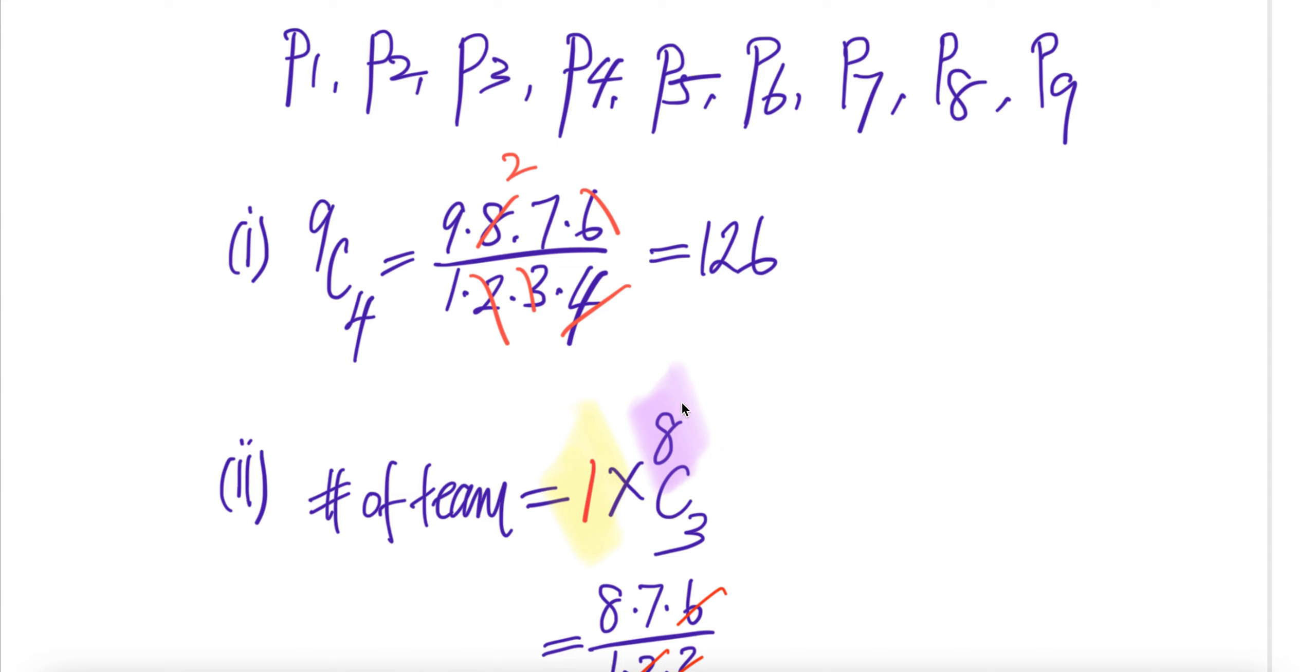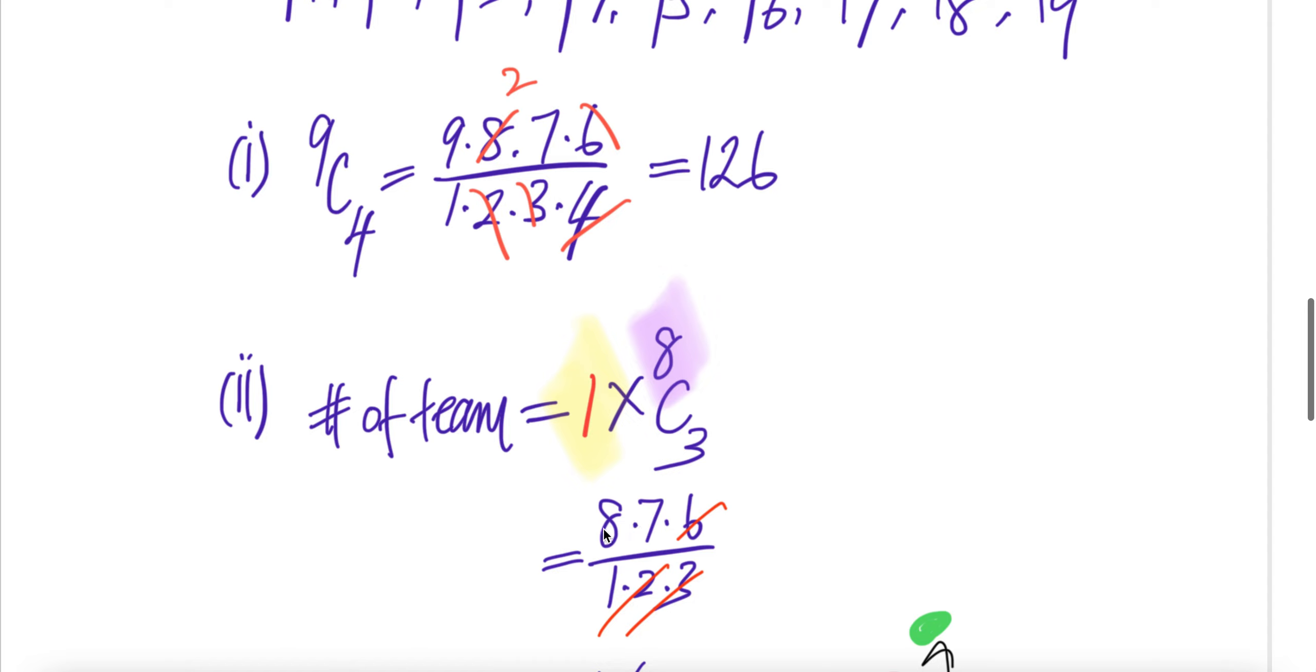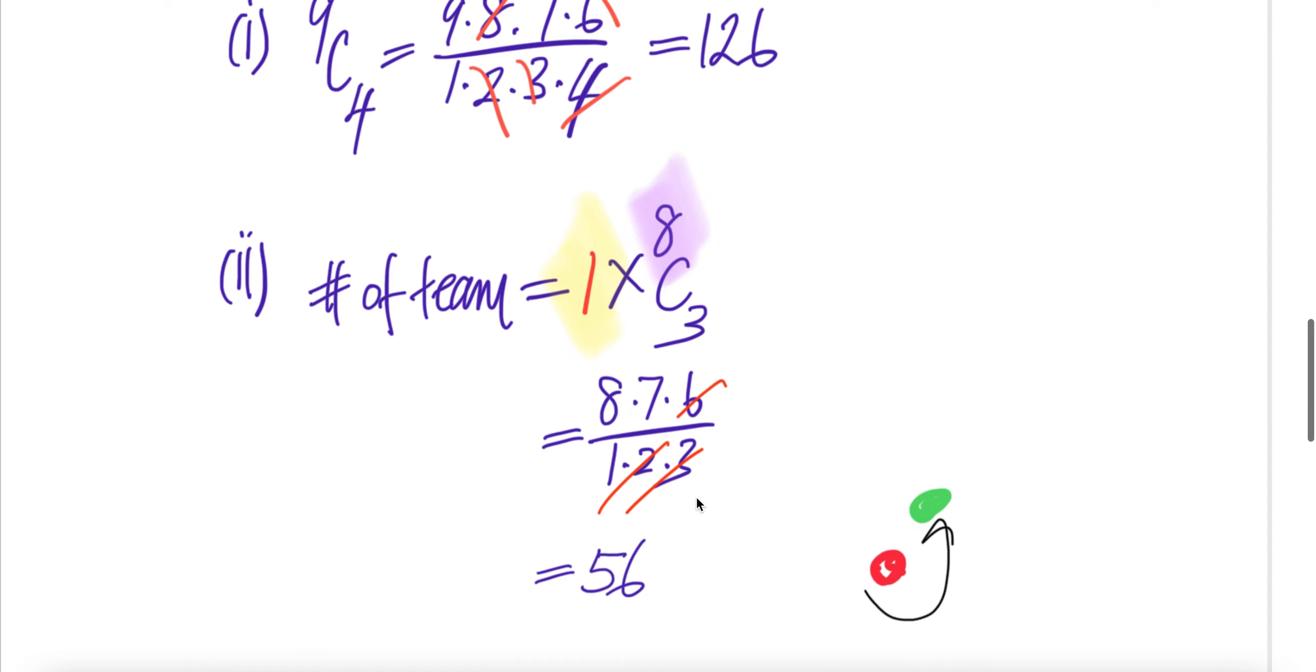And then you have eight left. So eight choose three. Because there's only one here, so you need to choose another three. So it'll be eight times seven times six divided by one times two times three. Six, eight, seven is 56. Done.